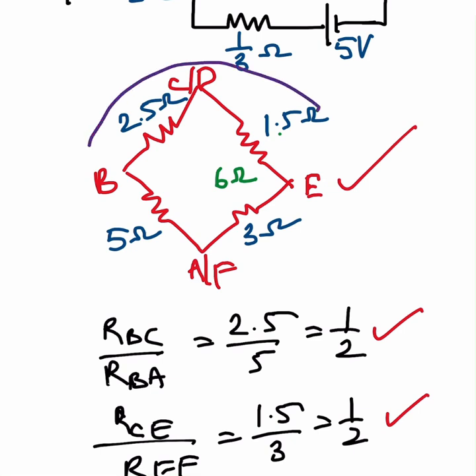That is 2.5 plus 1.5, which will become 4 ohms. Similarly, 5 and 3 are in series, that will become 5 plus 3, which is 8 ohms. Again, 4 ohms and 8 ohms are in parallel.